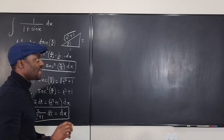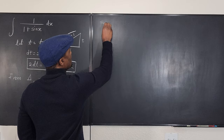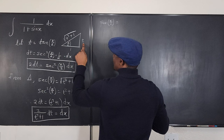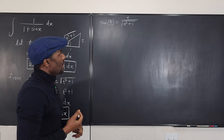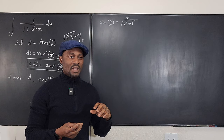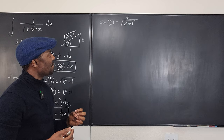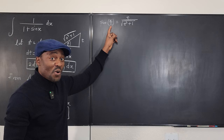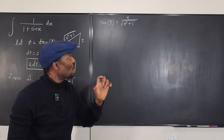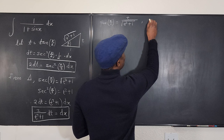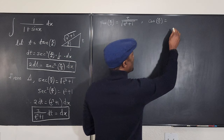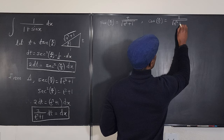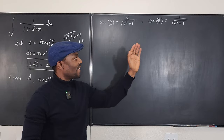To find sine x, let's first find sine x over 2 and cosine x over 2 from the triangle. Sine x over 2 equals opposite over hypotenuse, which is t over the square root of t squared plus 1. Cosine x over 2 equals adjacent over hypotenuse, which is 1 over the square root of t squared plus 1.